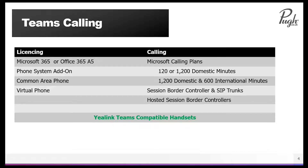Or you can have a 1,200-minute and 600-minute international-minute calling plan. These calling plans pool together. So if you buy some 120-minute plans, they're pooled together, and some 1,200-minute plans are in a separate pool. But if, for instance, you bought 10 120-minute plans, that would give you 1,200 minutes to share between those 10 users.